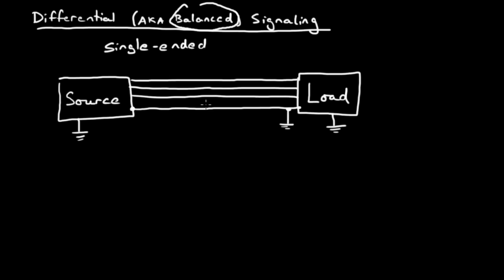Now, the return currents from each of these signals has to come back through this single ground connection. And one thing I want to point out is that, just to re-emphasize the point, and this will become more clear when I get into differential signaling, this ground is shorted to the ground over here, and it's shorted to the ground over here. That's different than what we'll see in differential signaling.